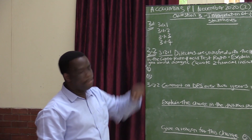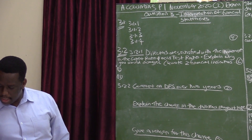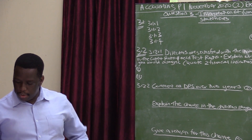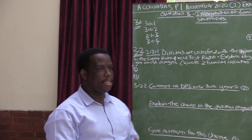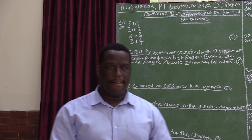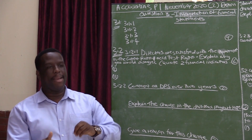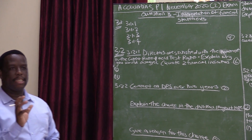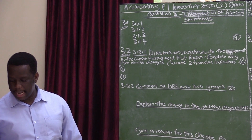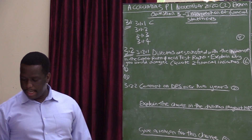Liquidity, which is 3.1.1, matches with option C in column B, which says: will the company be able to pay off its current debt? Remember there is liquidity and solvency. Solvency deals with the ability of the company to pay for the total debt, but liquidity deals with only the current debts. The total debts are made up of current debts plus non-current debts. When we look at liquidity we are only looking at the current debts. So option C is the correct answer for 3.1.1.